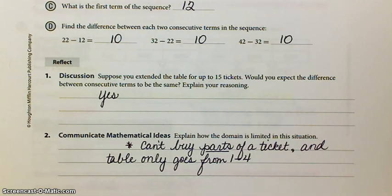Okay. Again, explain how the domain is limited. Well, you're not going to buy parts of a ticket and the table only goes from 1 to 4. So your domain is 1, 2, 3, 4.